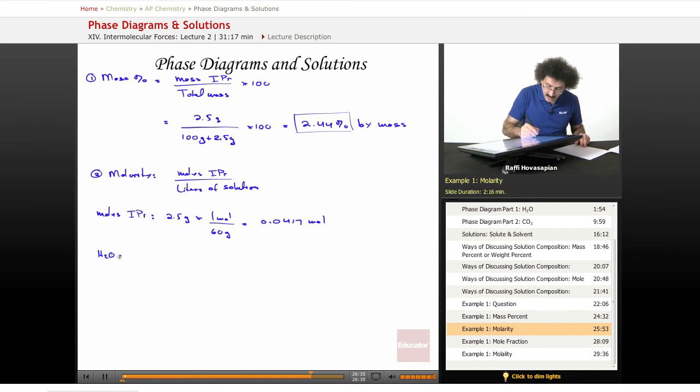Now H2O. 100 grams is 100 milliliters equals 0.100 liter, because water is 1 gram per milliliter in general. It's at 4 degrees Celsius, but not a problem.